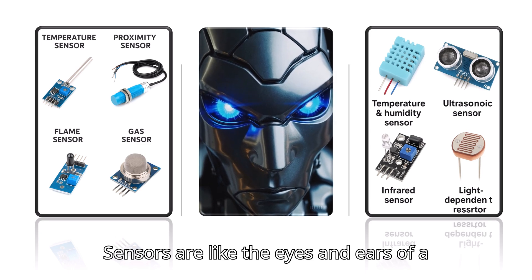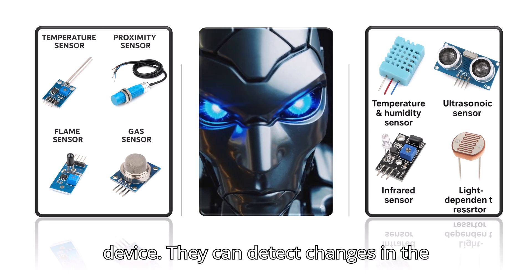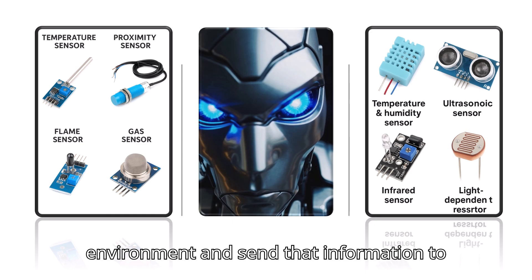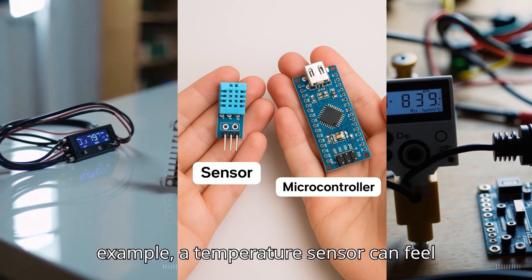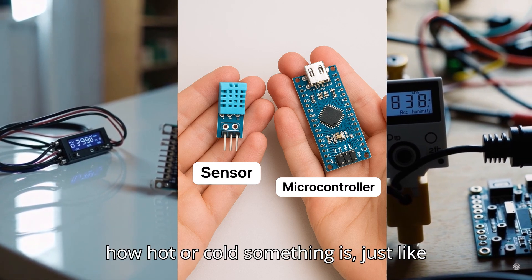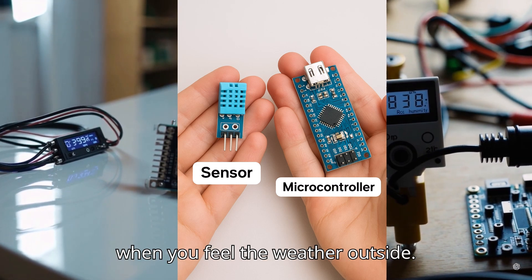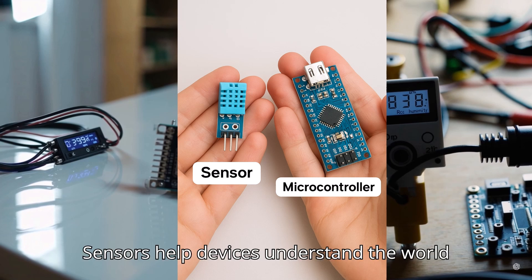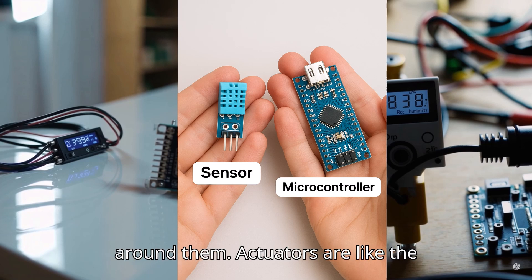Sensors are like the eyes and ears of a device. They can detect changes in the environment and send that information to a computer or microcontroller. For example, a temperature sensor can feel how hot or cold something is, just like when you feel the weather outside. Sensors help devices understand the world around them.